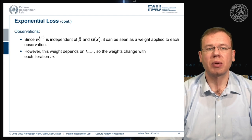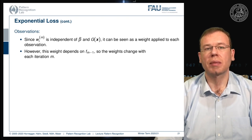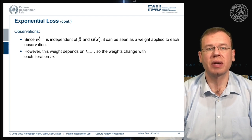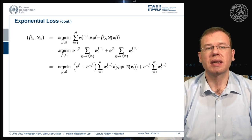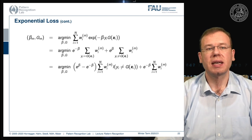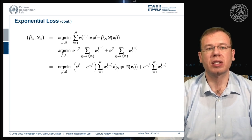Since w_i is independent of beta and g of x, it can be seen as a weight applied to each observation. However, this weight depends on the previous functions, so the weights change with each iteration m. This allows us to reformulate the problem by splitting it up into the misclassified and the correctly classified samples, and then rearranging the minimization expression.